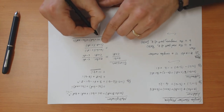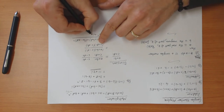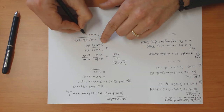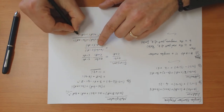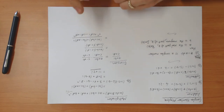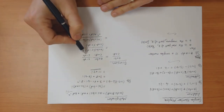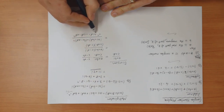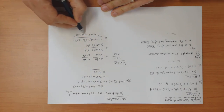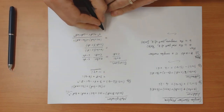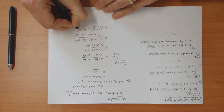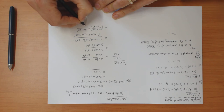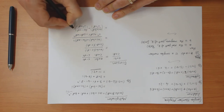On the bottom, you get c squared plus cdi minus cdi minus d squared times i squared. Since i squared is minus 1, this becomes c squared plus d squared — the i parts cancel. So the result turns out to be (ac plus bd) over (c squared plus d squared), plus (bc minus ad) over (c squared plus d squared) times i.